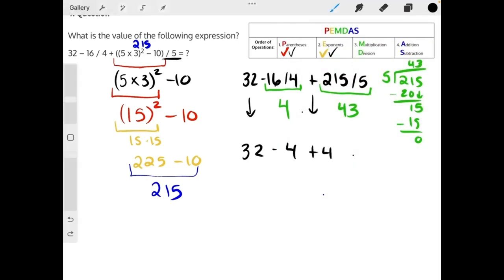Now we just need to do our final step of PEMDAS, our addition and subtraction, and go from left to right. 32 minus 4 will give us 28, bring down our plus 43, and this is our final step in this expression.